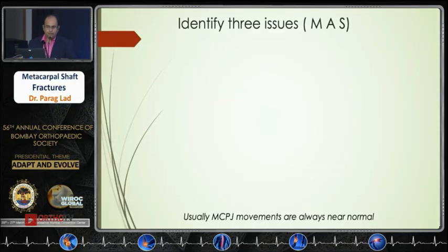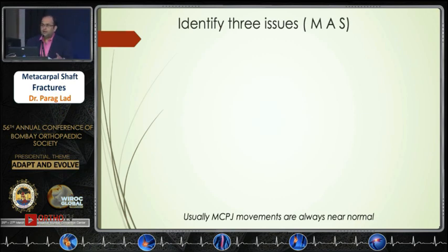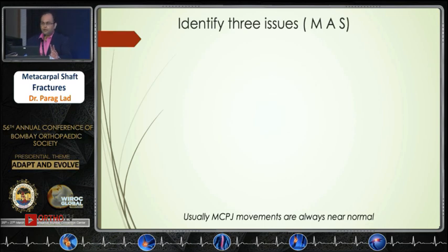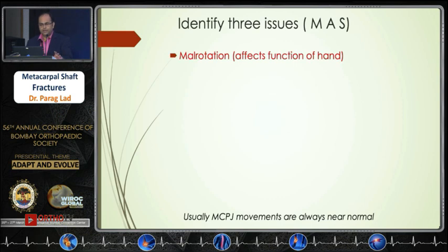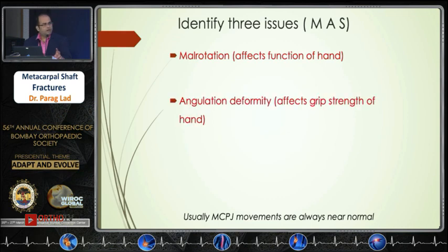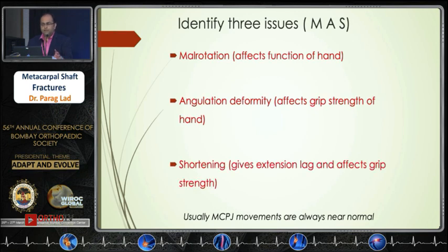I thank Bombay Orthopedic Society for this opportunity. In metacarpal shaft fractures, we should identify three important issues. Number one is malrotation — if you don't correct the malrotation of the fracture, it affects the function of the hand. Second is angulation deformity, which affects the grip strength of the hand. Third is shortening, which will always give an extension lag.